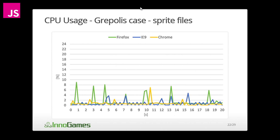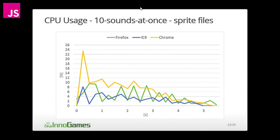CPU usage for sounds is usually not a problem — about half a percent of CPU usage when playing one sound. The peaks visible in the graph occur only when setting the current time, i.e., starting a new audio sprite segment. It's different for 10 sounds at once: when creating new audio elements, there's a huge initial peak — Chrome was using almost an entire core to handle it, and afterwards CPU usage settles at around 10%, which is quite significant, especially on mobile devices. On Firefox, we can mainly see jumps from time update handling.